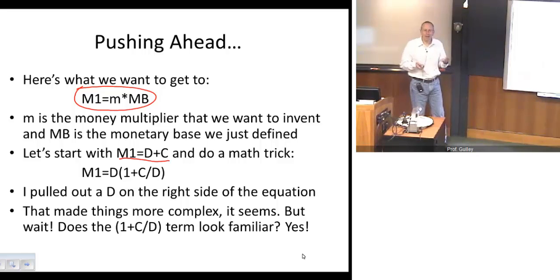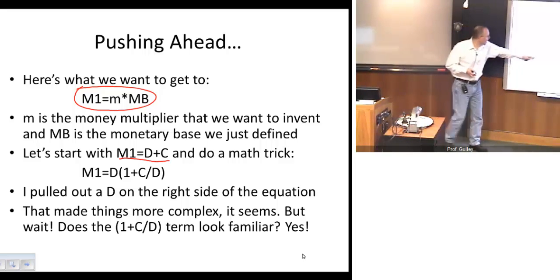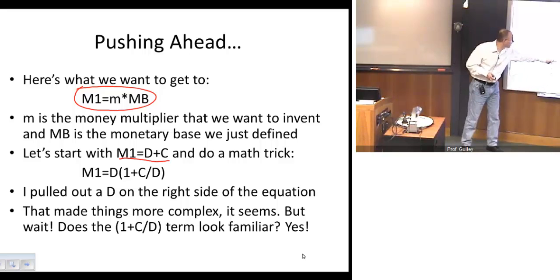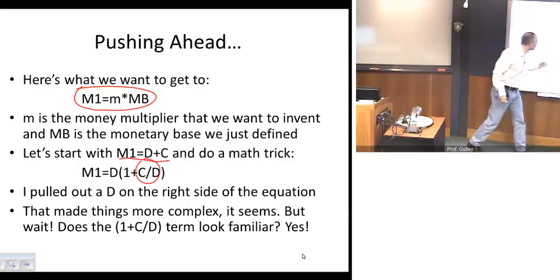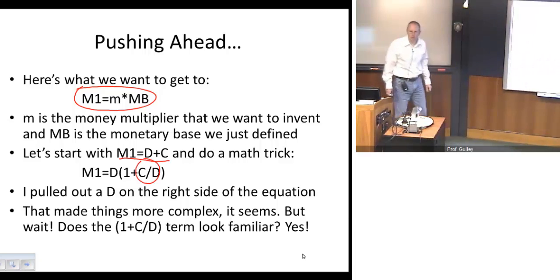And let's do a really simple math trick. Let's pull a D for deposits out of both of those terms. And so now we can say M1 is equal to deposits times one plus the ratio of currency to deposits. Okay, and your first thought is, oh gosh, I've just made the equation more complicated. I have, but only by a very slight amount.